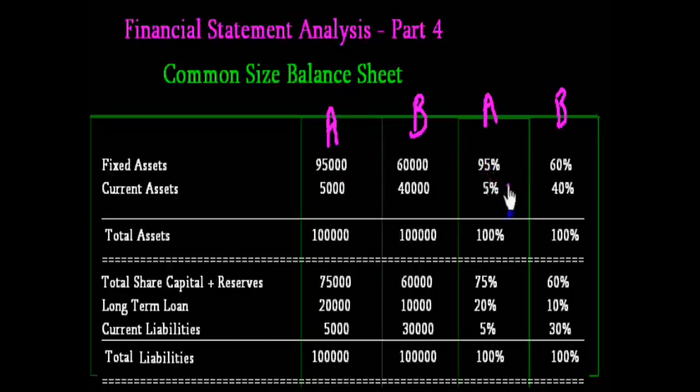This is not good. A company should use its own share capital for buying fixed assets. In Company B's case, that is good. 60% is share capital and reserves, and the same amount is used for buying fixed assets.